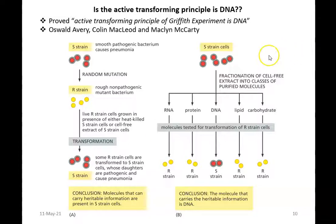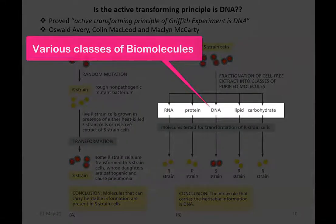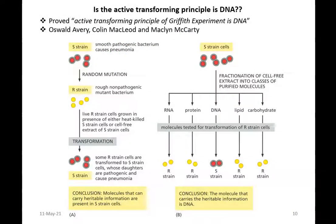This particular S-strain was taken and subjected to fractionation — that is, whatever biomolecule fractions were associated with this strain were separated. A cell-free extract was prepared and different classes of biomolecules were purified and separated. The possible biomolecules present in a living organism include RNA, protein, DNA, lipid, and carbohydrate. All these biomolecules were separately fractionated and then tested for the transformation ability on the R-strain.